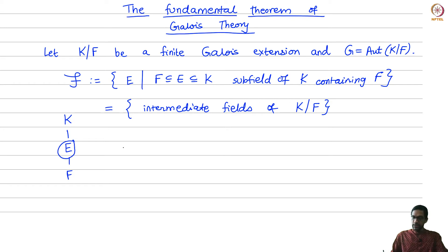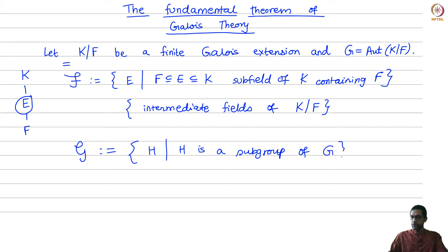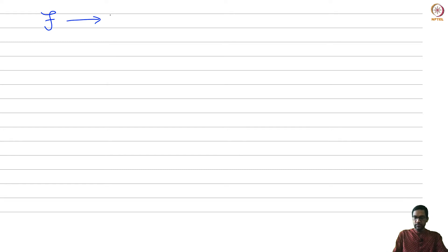The objects are in script F and in script G. Script G is the set of all H such that H is a subgroup of the group G of all automorphisms. And one has maps between these two sets — from script F to script G. Given an intermediate field E, one associates the set of all automorphisms of k which are the identity on E.